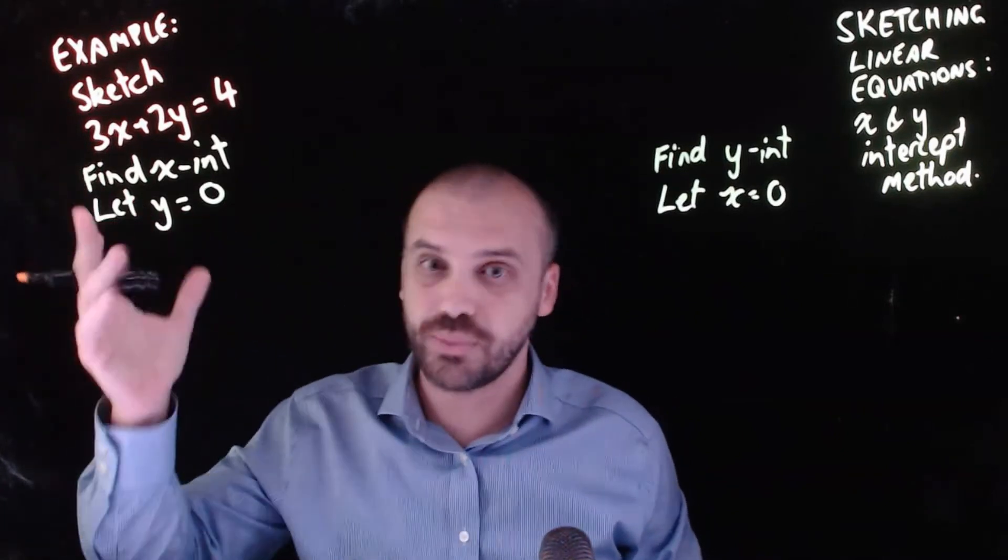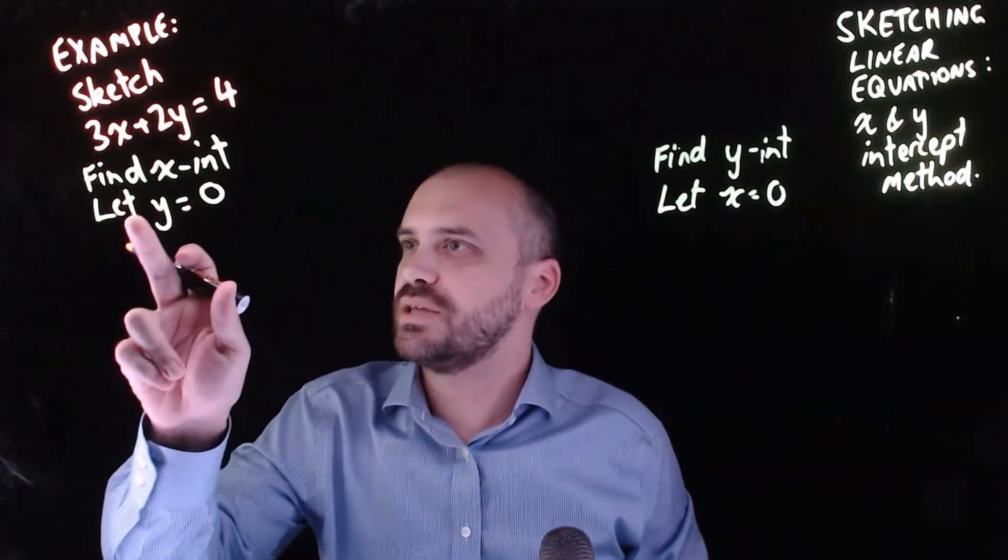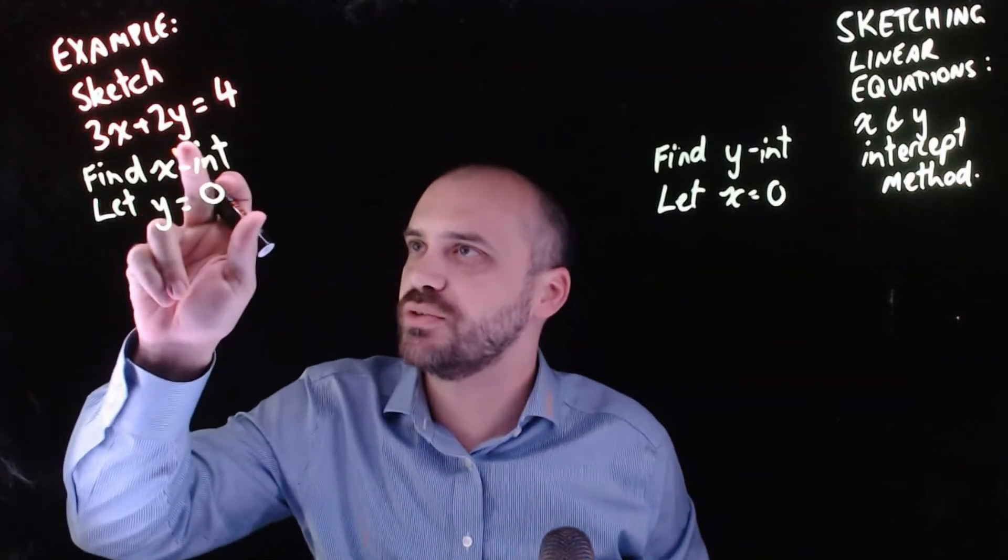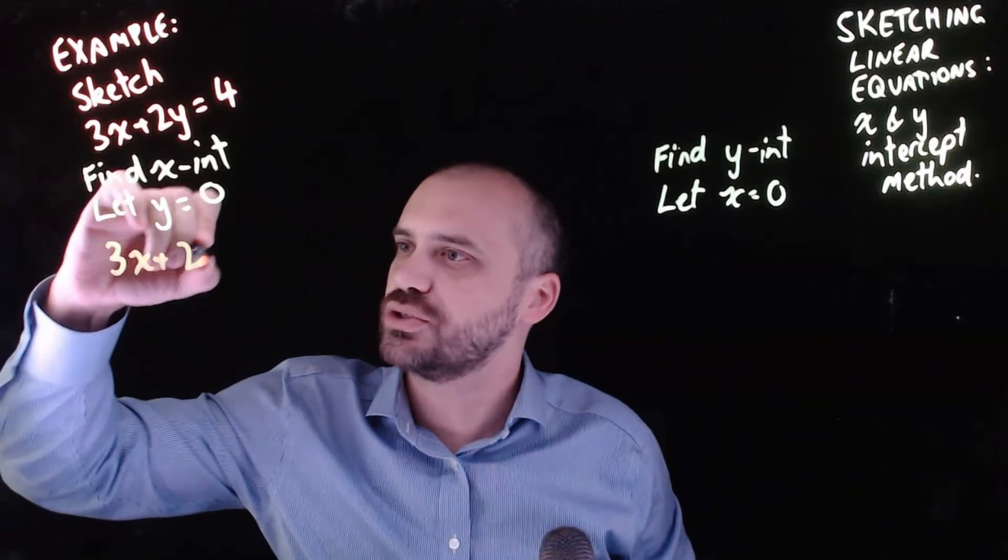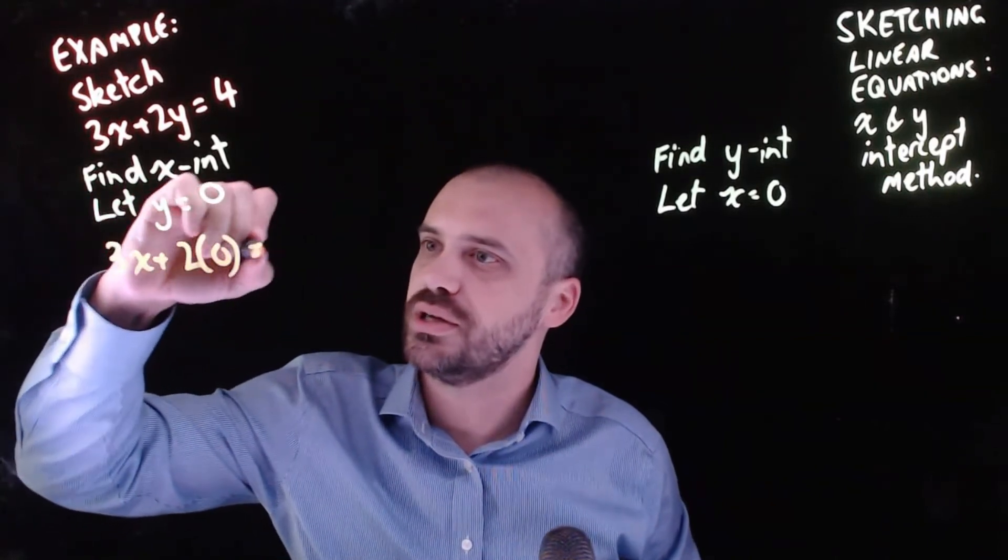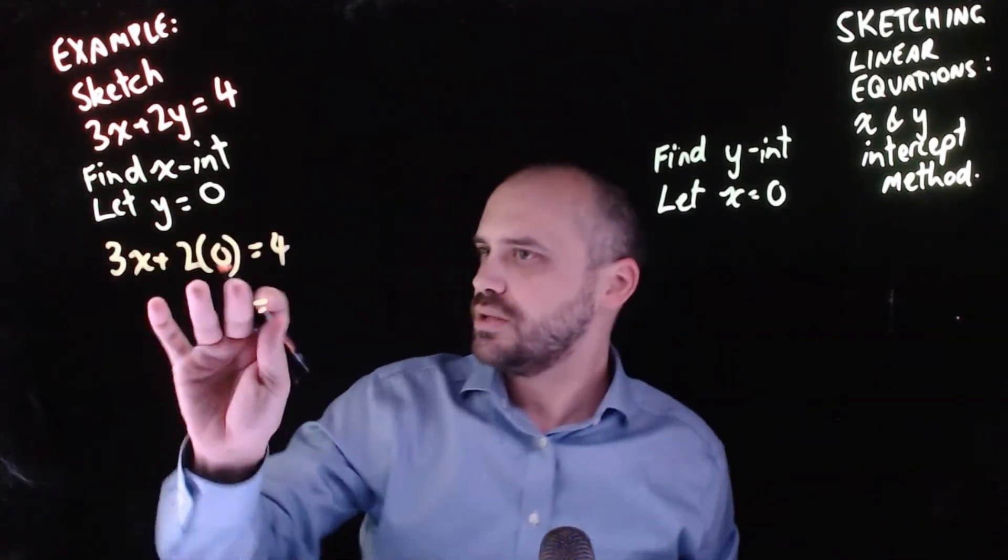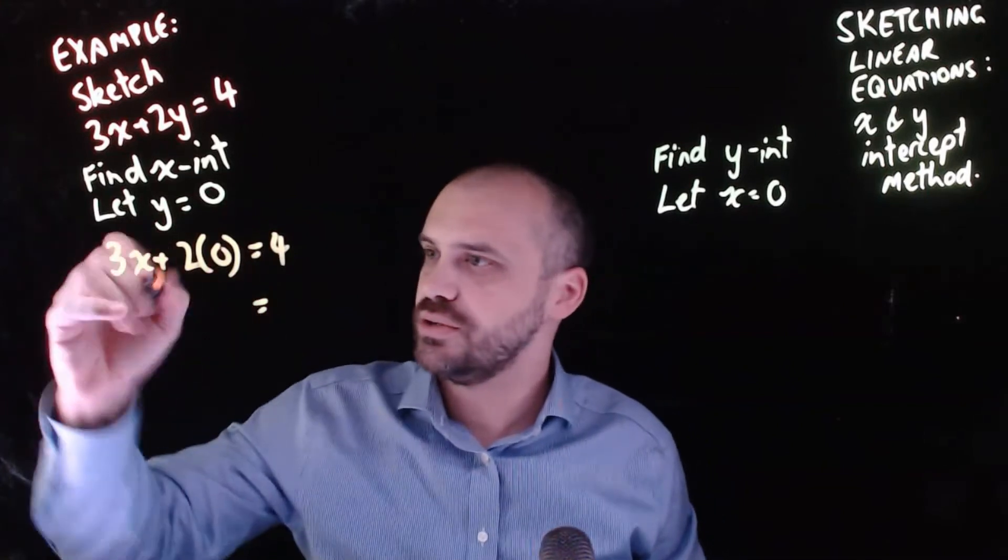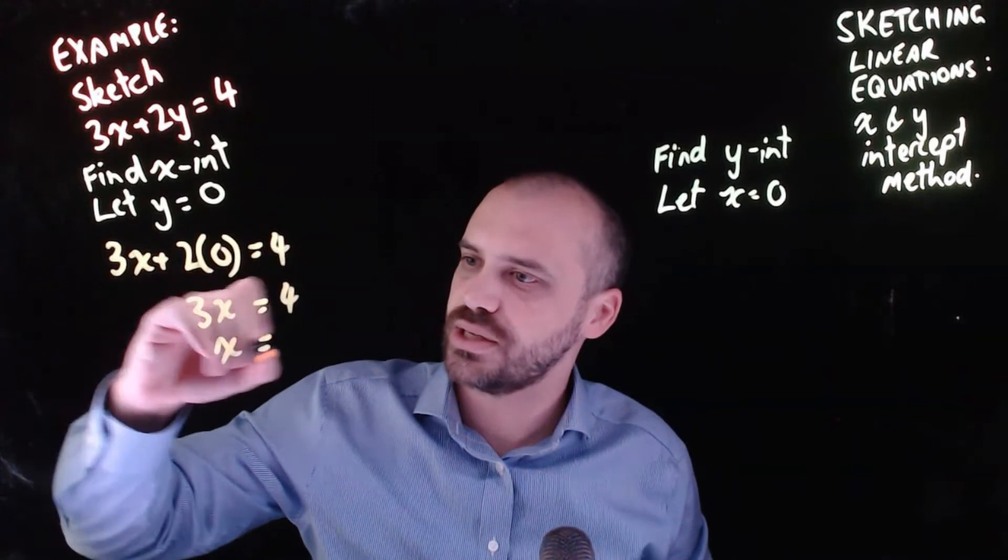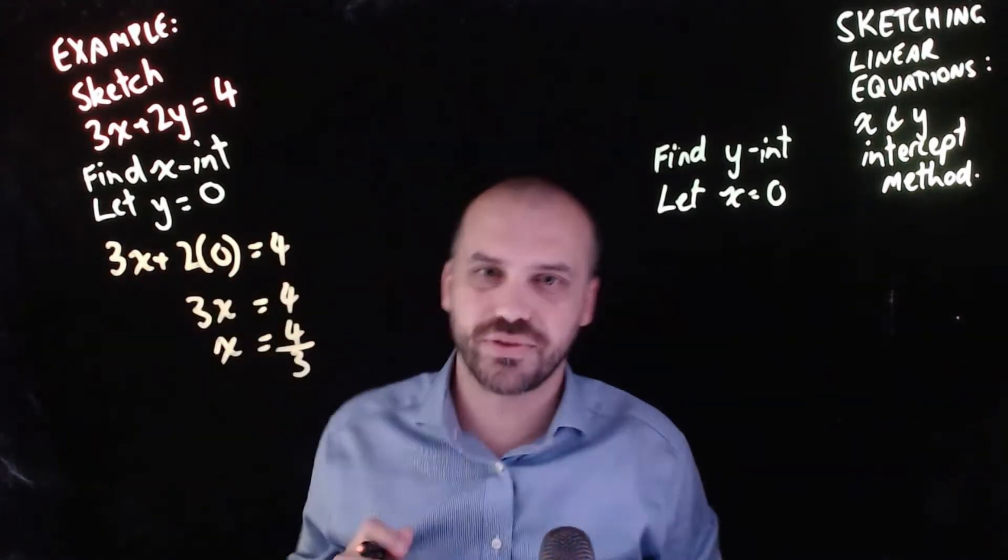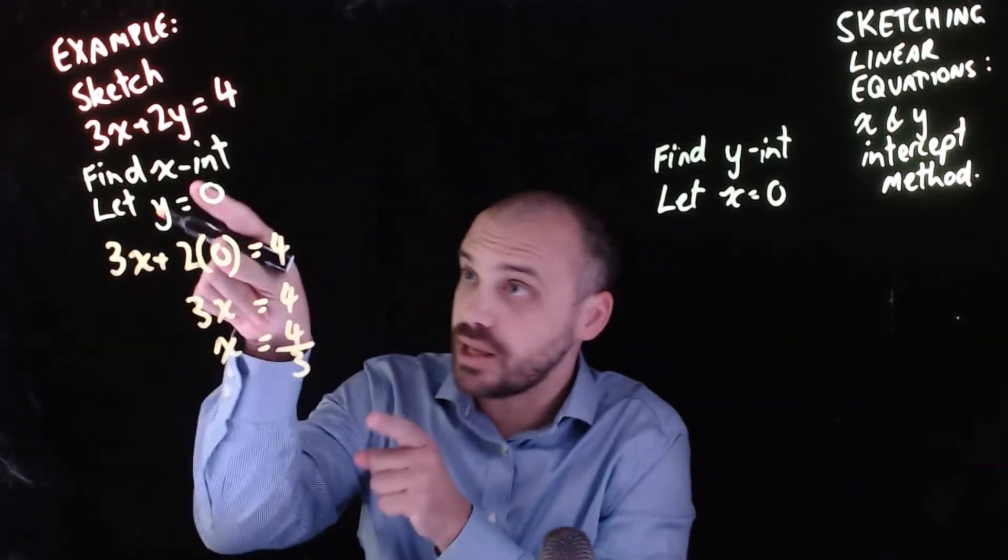We do exactly what we've written. To find the x intercept, we let y equal zero. Wherever we see y in the equation, we make it zero. So 3x plus 2 times 0 equals 4. 2 times 0 is 0, so we're left with 3x equals 4, which means x equals 4 over 3. That is our x intercept.